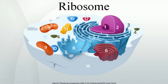In bacterial cells, ribosomes are synthesized in the cytoplasm through the transcription of multiple ribosome operons. In eukaryotes, the process takes place both in the cell cytoplasm and in the nucleolus, which is a region within the cell nucleus. The assembly process involves the coordinated function of over 200 proteins in the synthesis and processing of the 4 rRNAs, as well as assembly of those rRNAs with the ribosomal proteins.